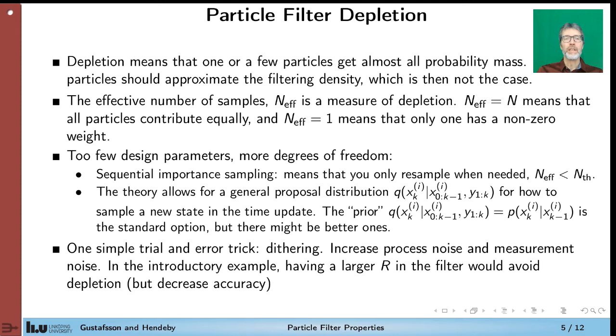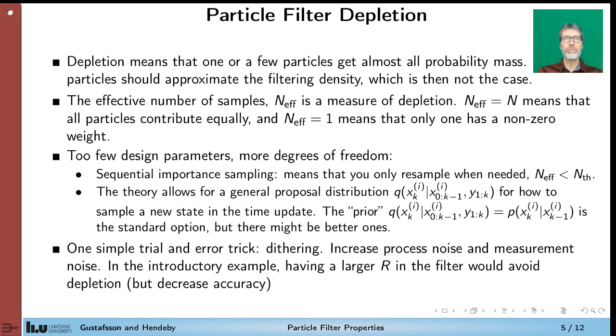So we will spend some time on particle filter depletion. So as you saw and this can be generalized, depletion means that all but a few particles get almost all probability mass. And since the particles should resample the filtering density, one way to monitor the particles is to compute the effective number of samples. We call it the N_eff here. And the basic property of this number is that if all particles are contributing to the filtering density, then N_eff should be equal to N, the number of particles. And if only one particle contributes, then N_eff is equal to one. So that's a wish list of this parameter. We will define it on the next page.